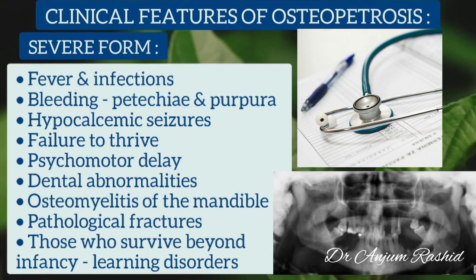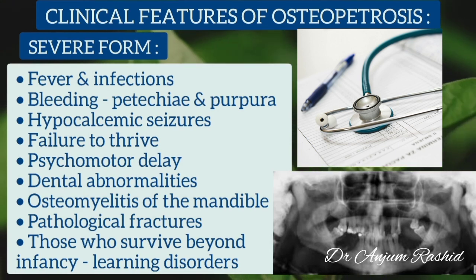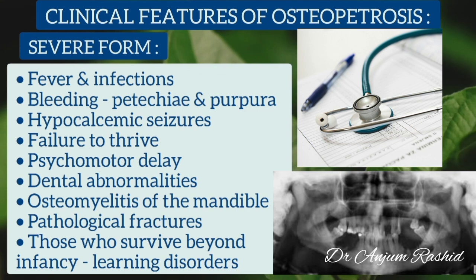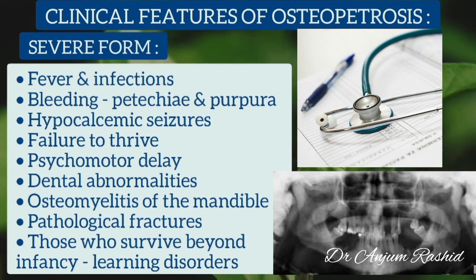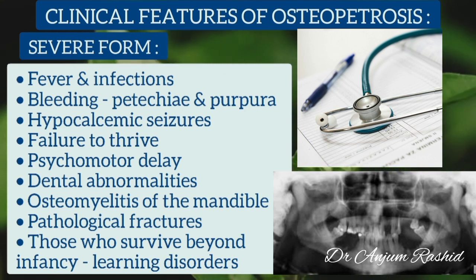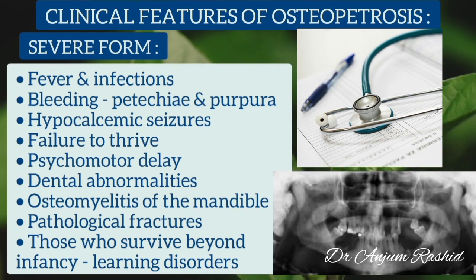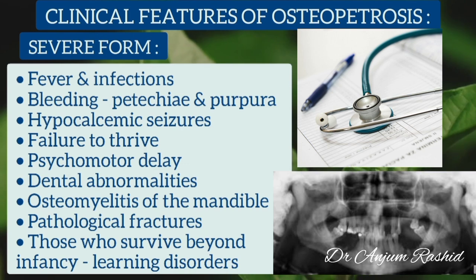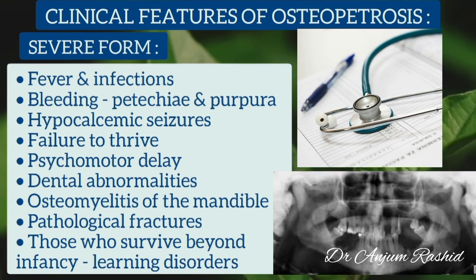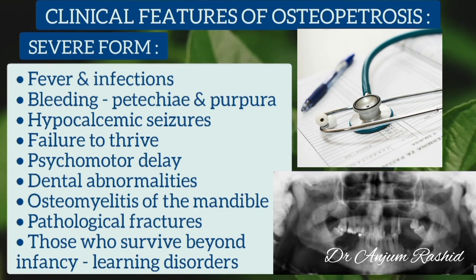Bleeding episodes such as petechial purpura due to thrombocytopenia and hypocalcemic seizures are also very common. There is failure to thrive and psychomotor delay. Dental abnormalities, osteomyelitis of the mandible, and pathological fractures are also common in the severe form. Those who survive beyond infancy usually have learning disorders.